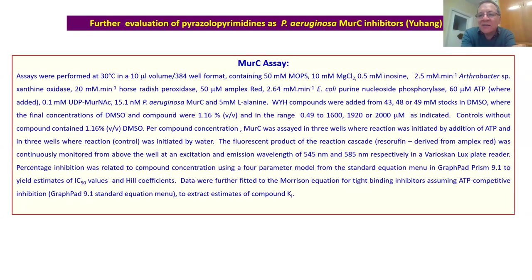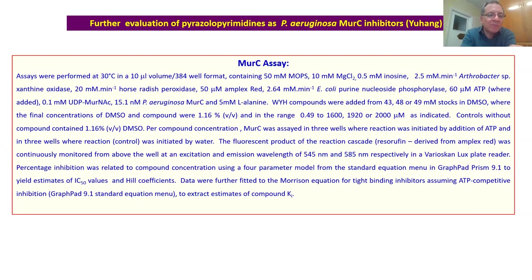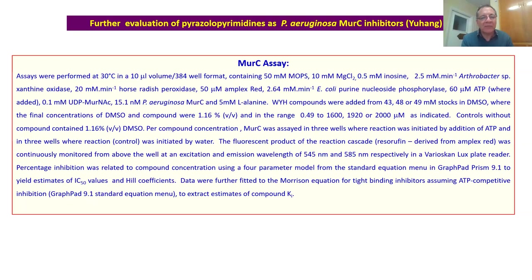I always basically put in the assay details of what we do — this is a description of a MERC assay, but it's applicable to the other ligases. It describes the phosphate release assay and the conditions that we use for that, and it describes a fluorescent assay and how we actually analyze the data at the end. We use a four-parameter model, which estimates IC50 and Hill coefficient.